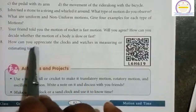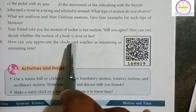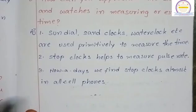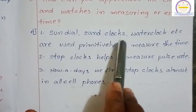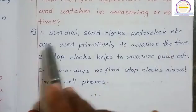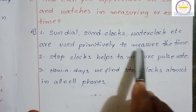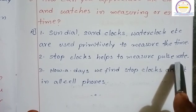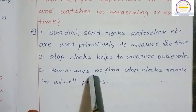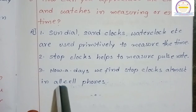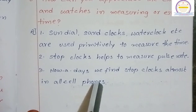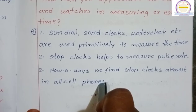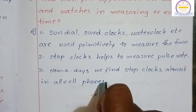Eighth question: How can you appreciate the clocks and watches in measuring or estimating time? Sundial, sand clock, water clock, etc., were used primitively to measure the time. Stop clocks help to measure pulse rate. Nowadays, we find stop clocks almost in all cell phones. These are the questions and answers of fifth lesson: Motion and Time.